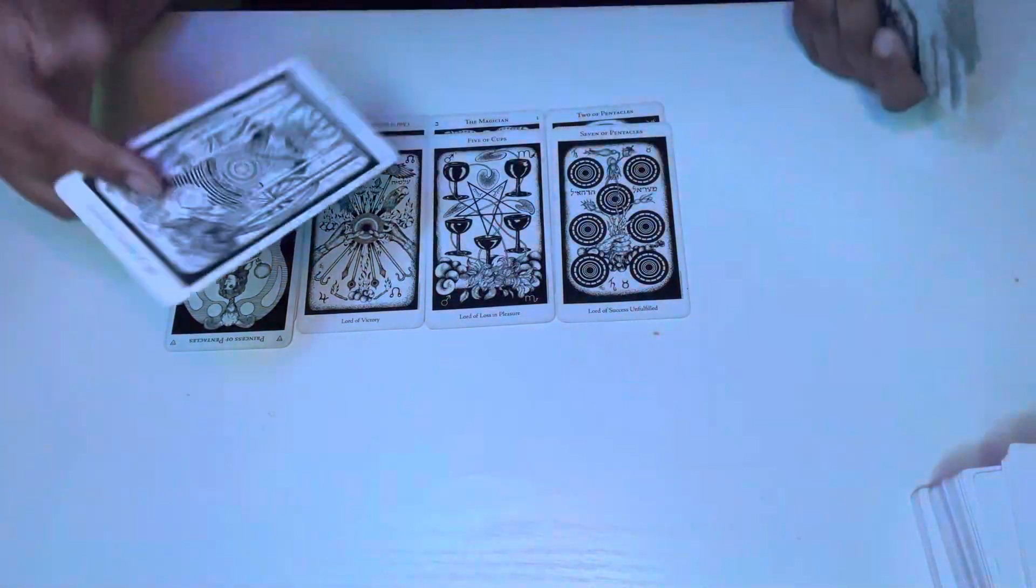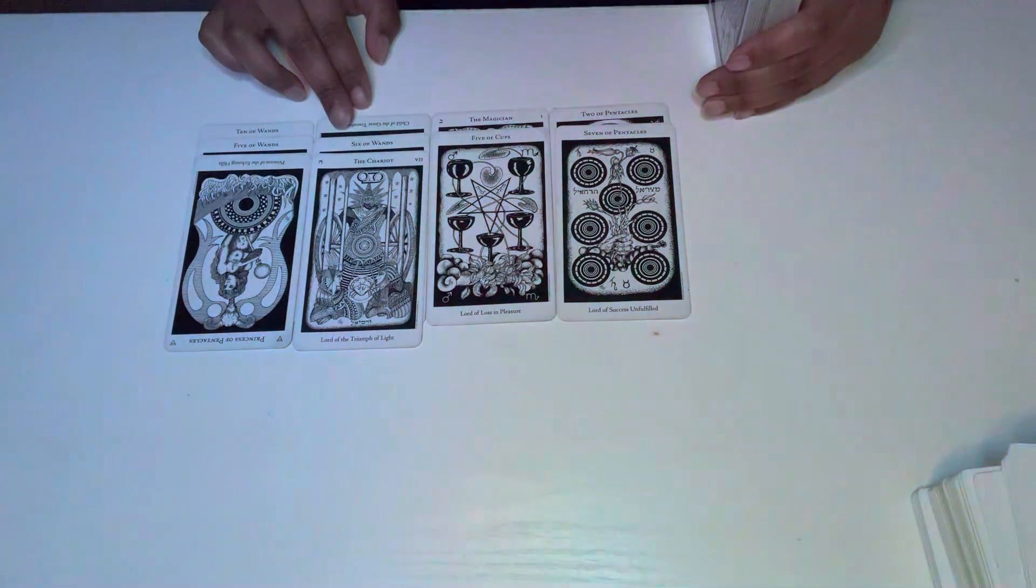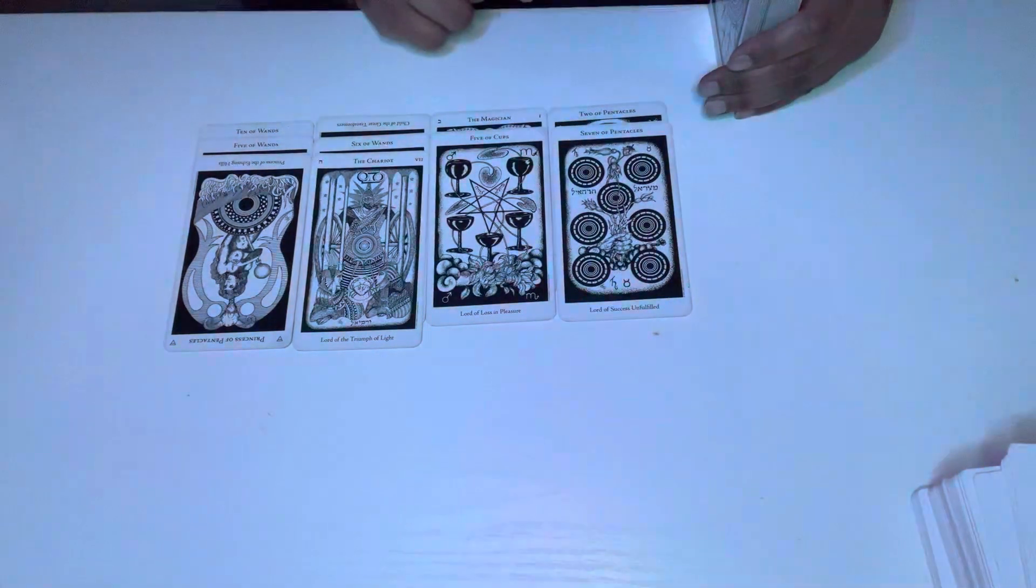Chariot here. Like I said you're being advised to move forward because somebody refuses to change. This person is very stubborn. You could be dealing with a fire sign or earth sign. Heavy on the Taurus energy.